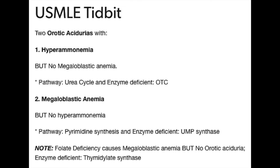They also cause megaloblastic anemia because they interfere with DNA synthesis. This megaloblastic anemia is unique among megaloblastic anemias because it doesn't improve with the administration of vitamin B12 or folic acid. Patients with this disease will also have failure to thrive.